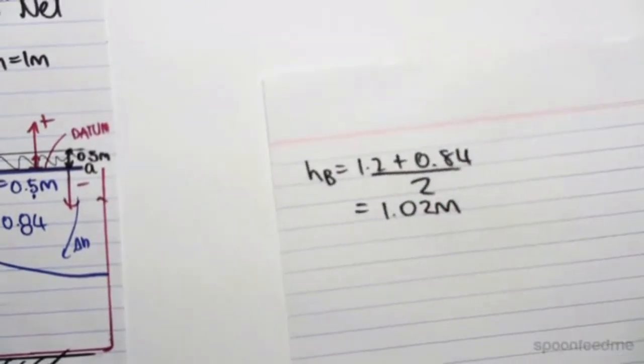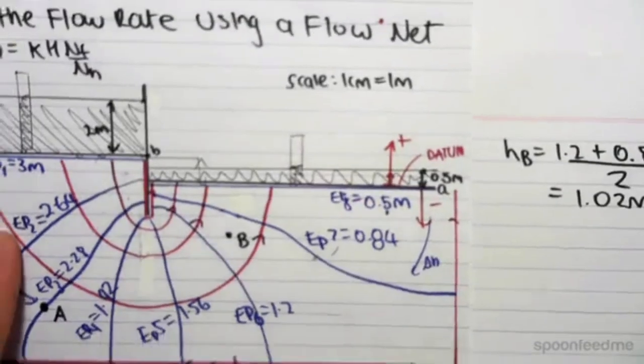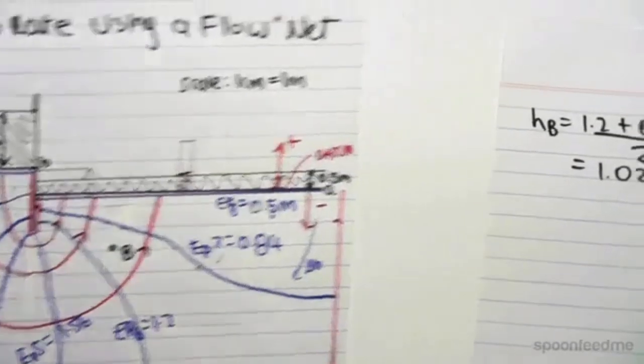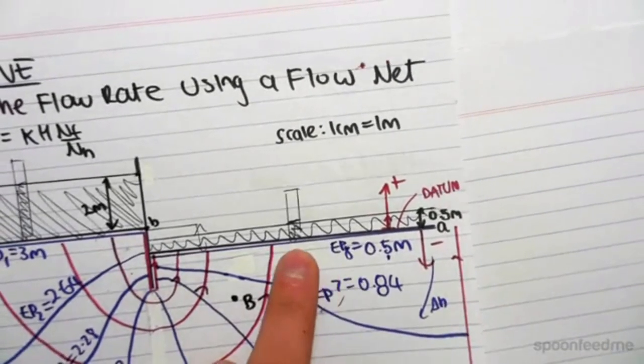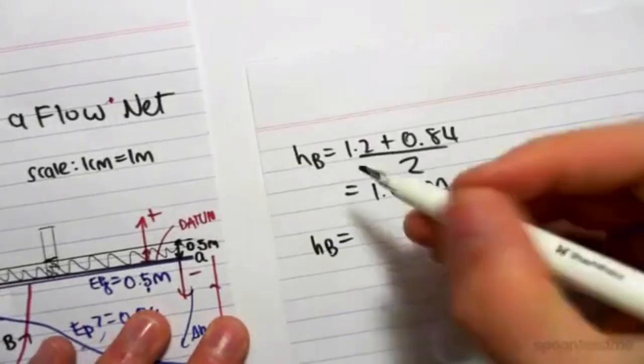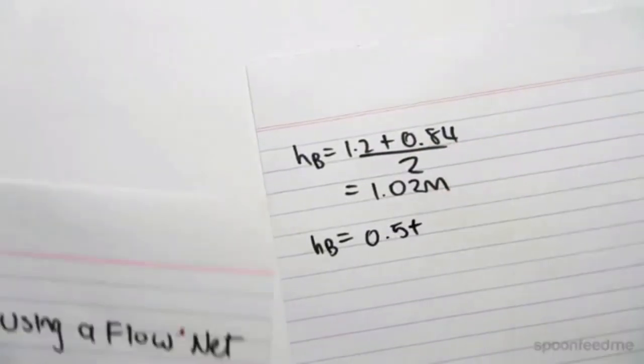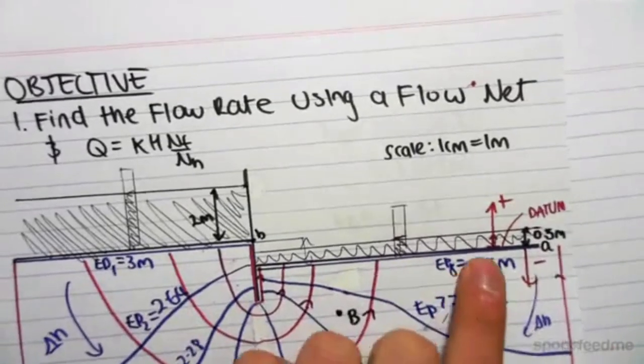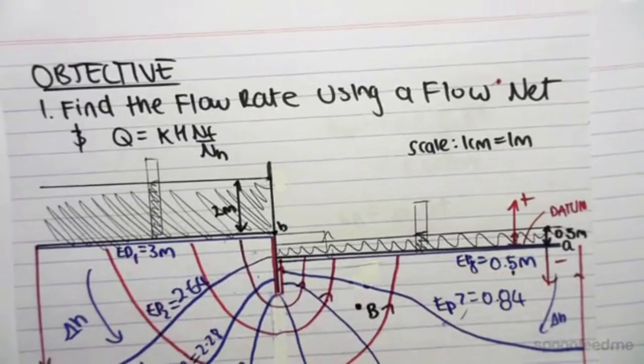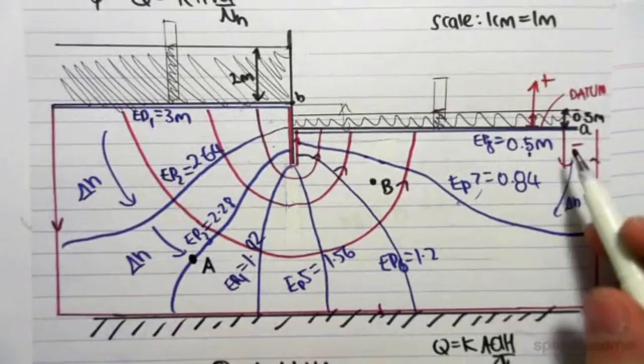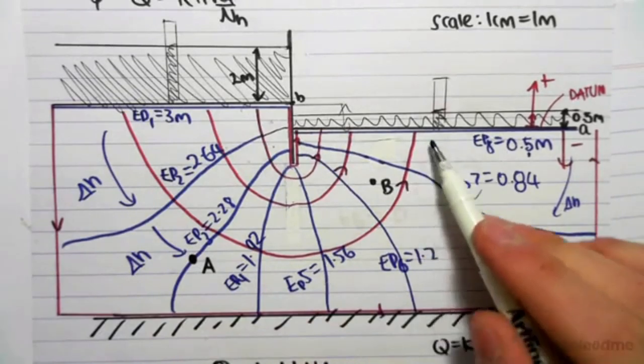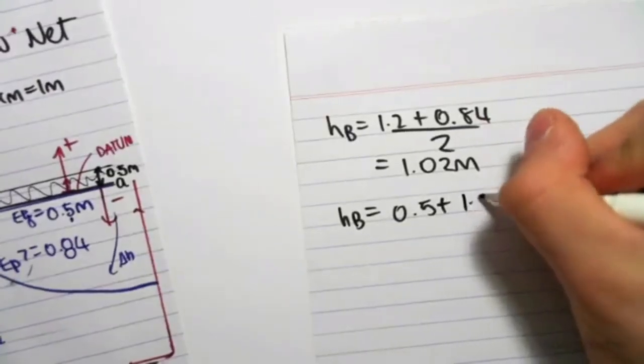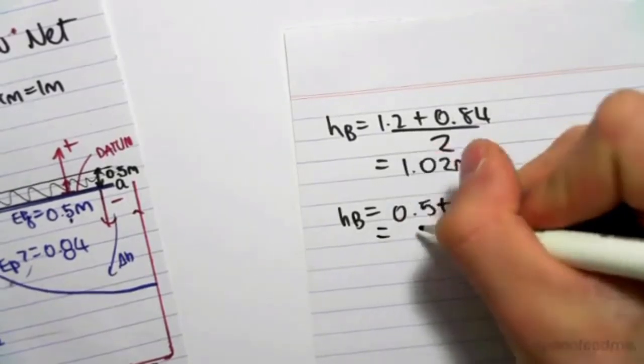That's the head value. If I wanted to do it so I wouldn't have to draw all these EPs in, I could have done it like the previous one. The head at B would come to the head over here, that's 0.5, plus - because we need to go from low head to high head, we're going to add on changes in H. How many changes in H's do we have? We have roughly 1.5. So it's 0.5 plus 1.5 times change in H.